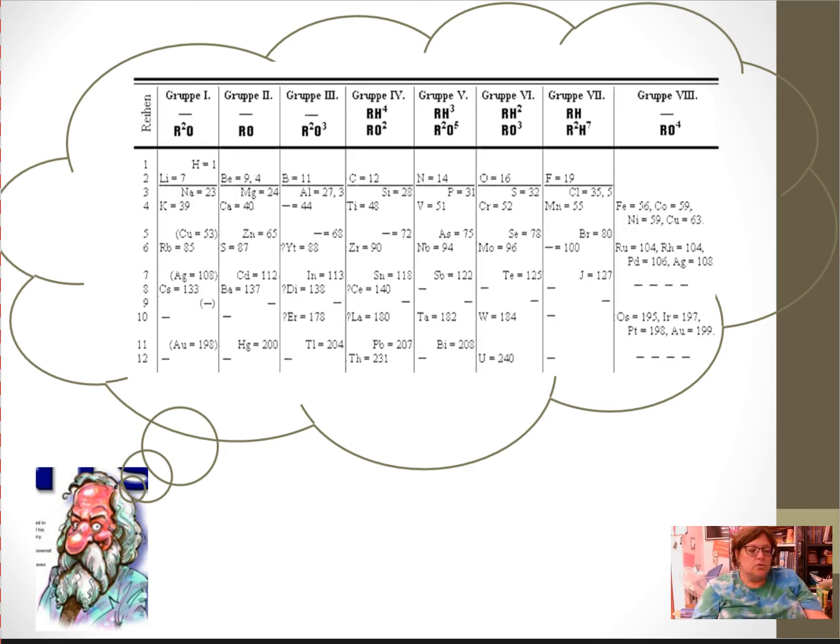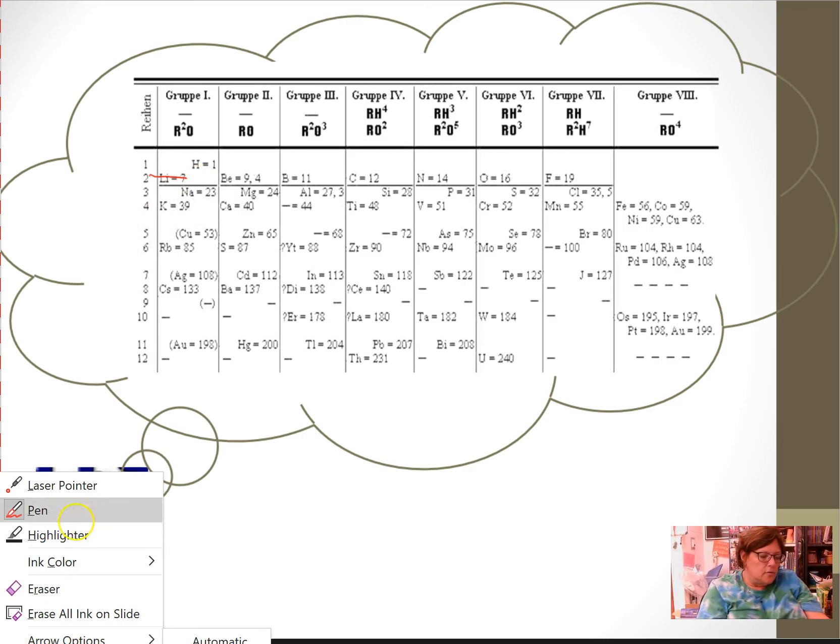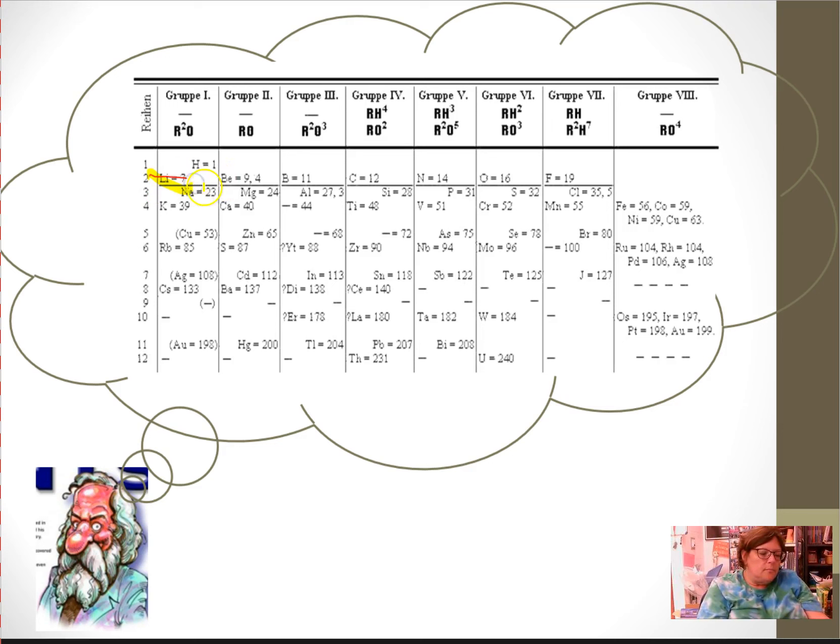Now, this is a picture of Mendeleev's periodic table. And if you look, here's group one. Lithium, sodium, potassium, rubidium, cesium. If you look at your periodic table, those guys all are in the first column, column 1A.